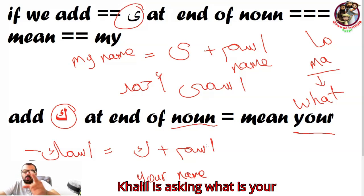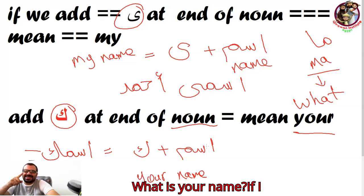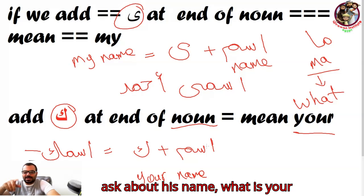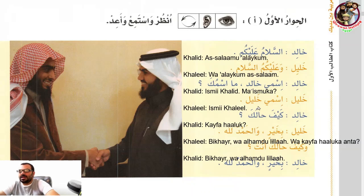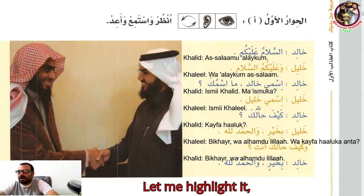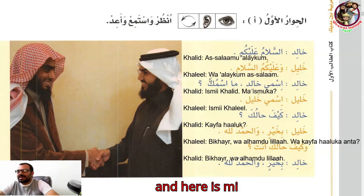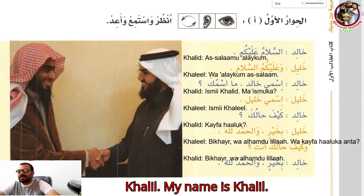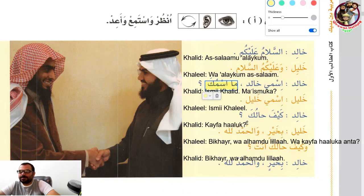Khalil is asking: 'Ma ismuk?' — What is your name? Repeat after me: 'Ma ismuk.' And the answer is: 'Ismi Khalil' — my name is Khalil. Let's highlight it: 'Ma ismuk?' 'Ismi Khalil.'